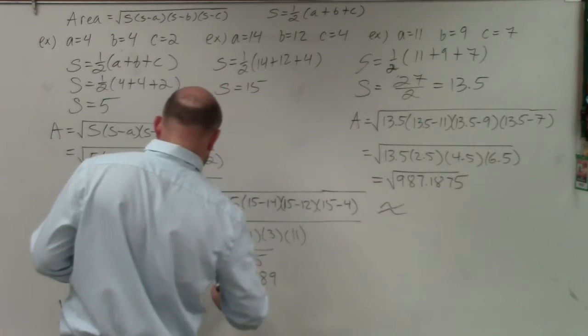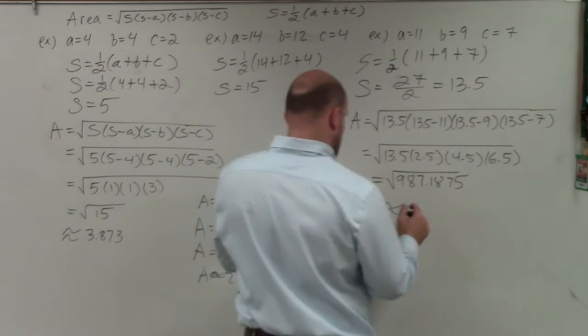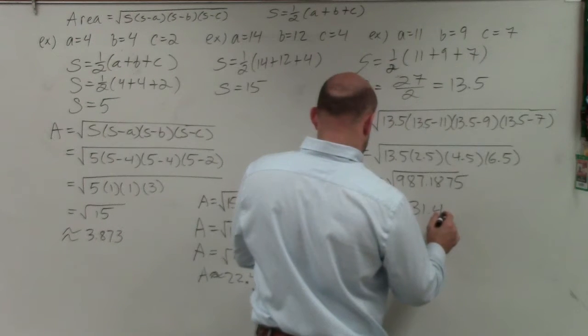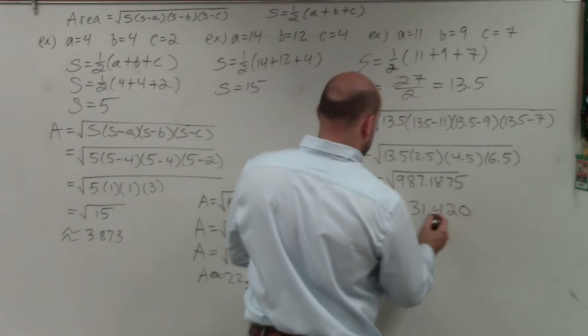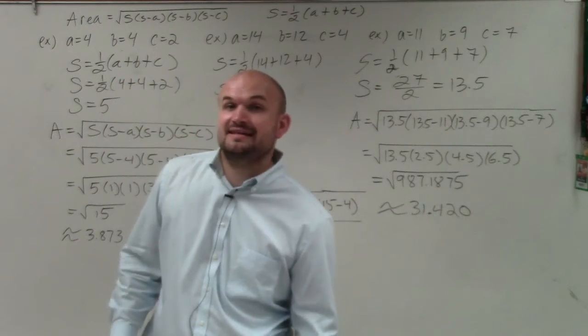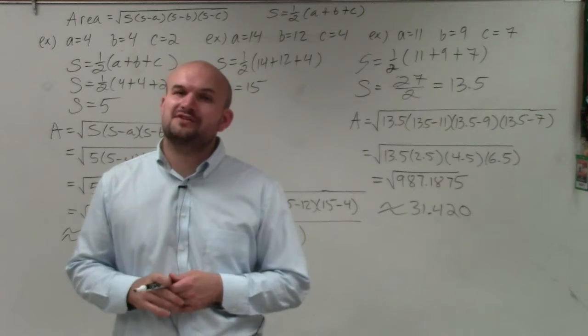I should have noticed that, approximate that to be 31.4, let's see, rounded to the nearest thousandth here, brings that up to a zero. So there you go, ladies and gentlemen. That is how you identify the area of an oblique triangle using Heron's formula. Thanks.